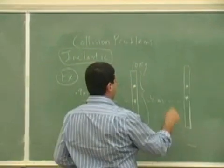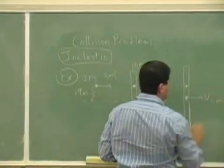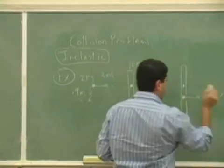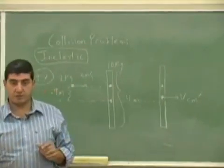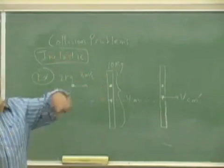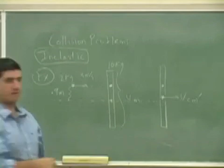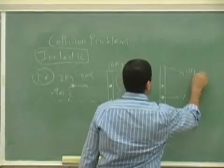So therefore the object is going to translate V center of mass prime. That's the new center of mass. So it's going to have a V center of mass prime and on top of it it's going to rotate around that new center of mass. Omega final.